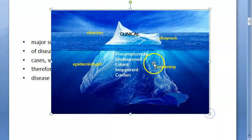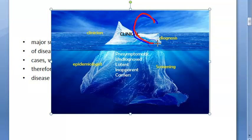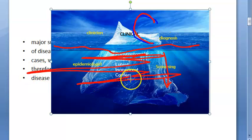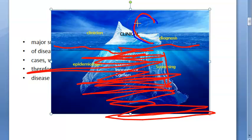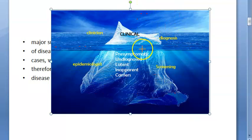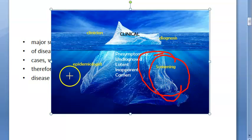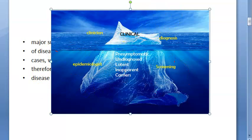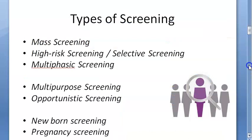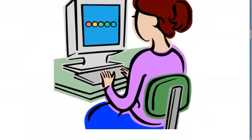A major portion of diseases will usually be below the waterline — the iceberg phenomena. What you actually see is the clinical portion. But the major portion of diseases is below the water line — you cannot see them. Most tuberculosis cases will be there: undiagnosed, latent, inapparent, carriers, pre-symptomatic. Those you can catch by screening. This is the concern of an epidemiologist. Screening wants to catch these people who have hidden disease.